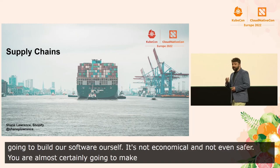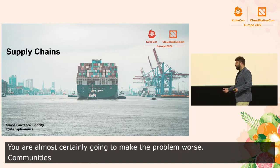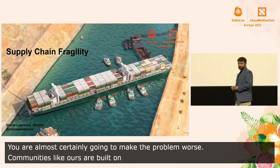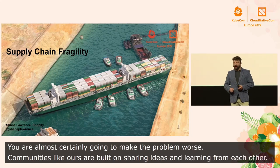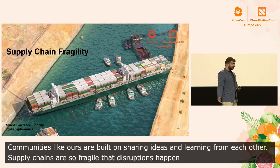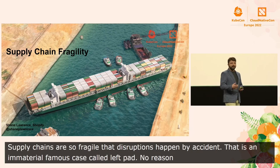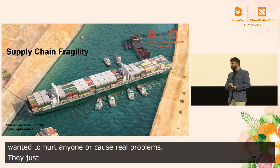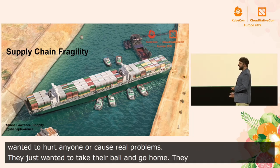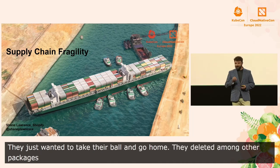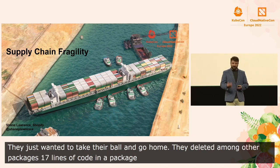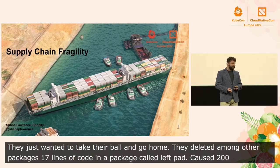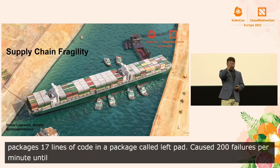Communities like ours are built on sharing ideas and learning from each other. Supply chains are so fragile that disruptions even happen by accident. There is an infamous case called LeftPad — you may have heard of it. There's no reason to believe the developer actually wanted to hurt anyone or cause real problems. They just wanted to take their ball and go home. They deleted, among some other packages, 17 lines of code in a package called LeftPad. It caused 200 failures per minute until NPM restored it, and broke many packages that had no idea they were even using this.